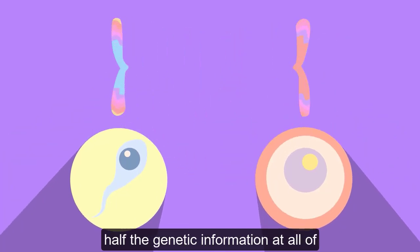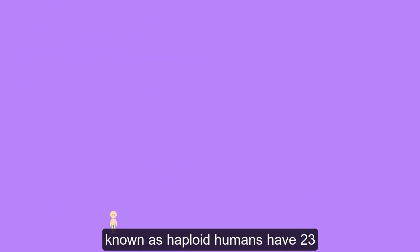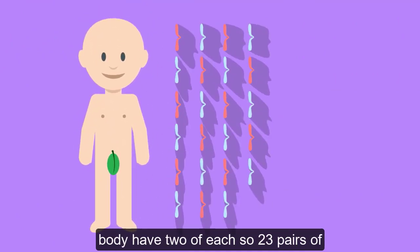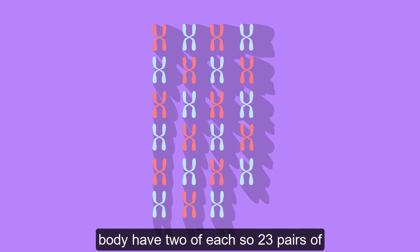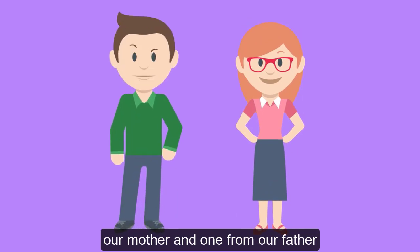They have half the genetic information that all of our other body cells have and so are known as haploid. Humans have 23 chromosomes and most of the cells in our body have two of each. So 23 pairs of chromosomes make 46 in total, one from our mother and one from our father.